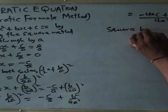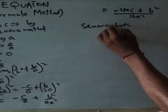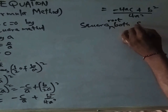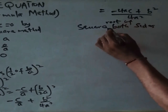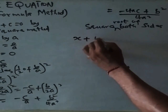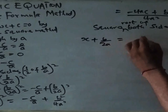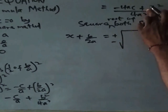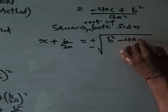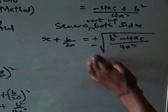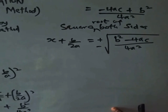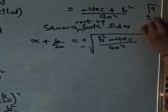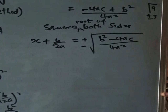Taking the square root of both sides, we have x plus b over 2a — the square is gone — equals plus or minus the square root of b squared minus 4ac over 4a squared. We have plus or minus because the expression has two roots. As I mentioned in the last class, the square root of 9 can be plus or minus 3, since 3 times 3 is 9 and minus 3 times minus 3 is also 9.